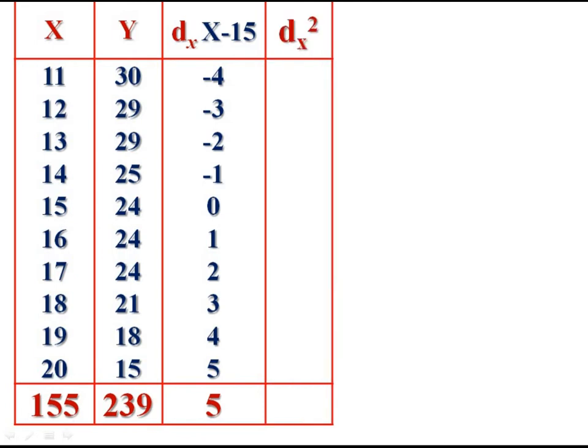Then compute dx squared — square the deviations. Minus 4 squared is 16. Minus 3 squared is 9. Minus 2 squared is 4. And so on: 1, 0, 1, 4, 9, 16, and 25. Get its summation. Sigma dx squared equals 85.